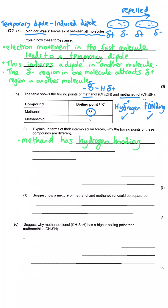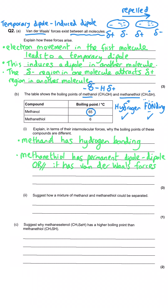Moving on to methanethiol: we can see instantly it won't have hydrogen bonding because it doesn't have fluorine, oxygen, or nitrogen. It does have sulfur, so we'd expect sulfur and hydrogen to have different electronegativities, meaning methanethiol would have permanent dipole-dipole forces — or van der Waals forces only is also acceptable since you're not expected to know the specifics. The final mark comes from saying hydrogen bonds are stronger than dipole-dipole forces, or that they are the strongest intermolecular force.